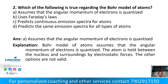Next question: which of the following is true regarding the Bohr model of atom? Option A: assumes that the angular momentum of the electron is quantized. Option B: uses Faraday's laws. Option C: predicts continuous emission spectra for atoms. Option D: predicts the same emission spectra for all types of atoms. The answer is Option A — the Bohr model assumes that the angular momentum of electrons is quantized.